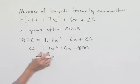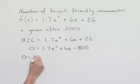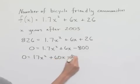Next, we notice that we have a decimal expression here. We can multiply everything by 10 to give us 0 equals 17x squared plus 60x minus 8,000.